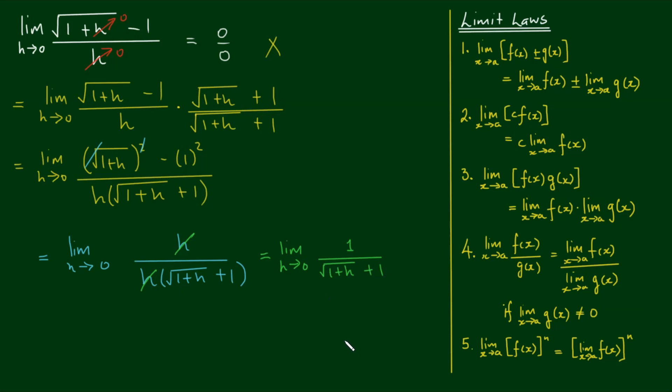So can we apply limit law number 4 now to this one? Let's see, because obviously the 1s are not affected. But as h approaches 0 here, the square root term is the square root of 1. So we have a case of 1 divided by 1 plus 1, which of course equals 1 half.